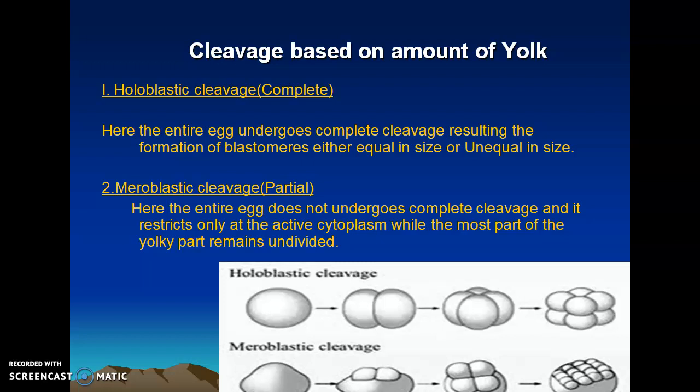In the very beginning I have told you what are the different types of egg, where we discussed classifying eggs into different types depending upon certain criteria like the amount of yolk and the distribution of yolk. Based on the amount of yolk we have categorized different types of eggs: microlecithal, mesolecithal, telolecithal, macrolecithal, and centrolecithal. In these different kinds of eggs the pattern of cleavage is different because the distribution of yolk is different.